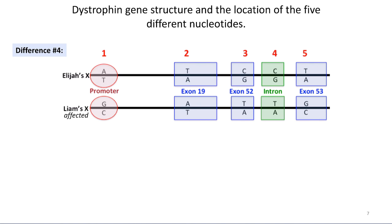Here is Elijah's X chromosome and here is Liam's. Elijah has an A, Liam has a G; then a T and an A; a C and a T; a C and a T; and a T and a G — those are the five differences. Looking at the gene structure, one difference is in the promoter, three — differences two, three, and five — are in exons, and difference number four is in an intron. We're going to start with difference number four.